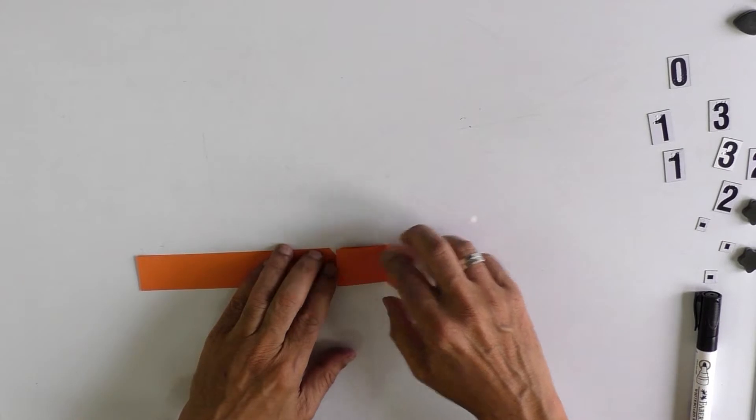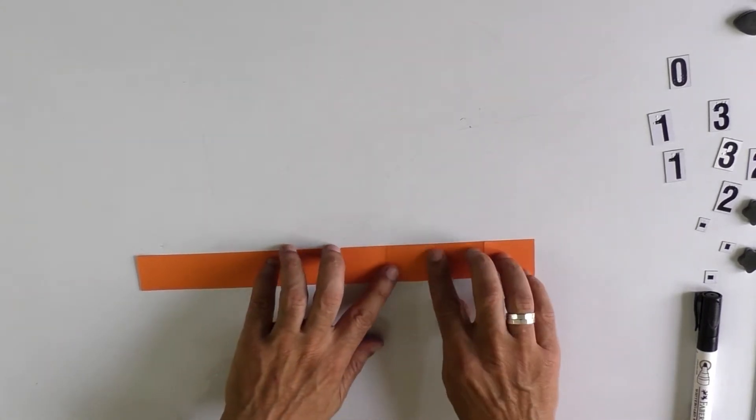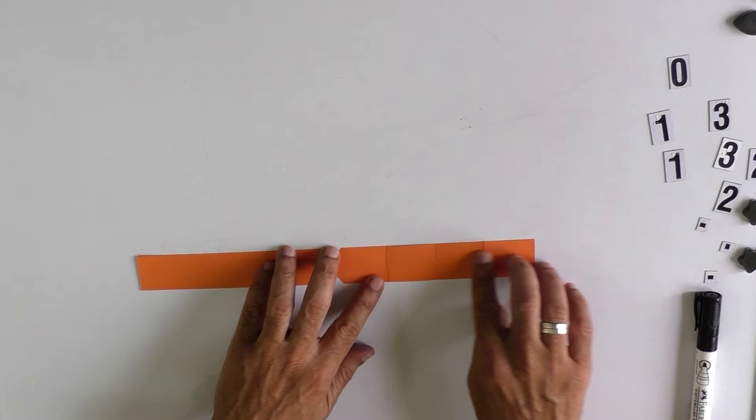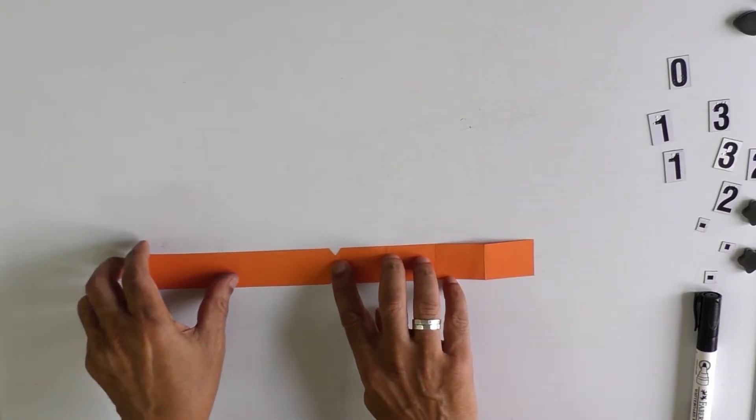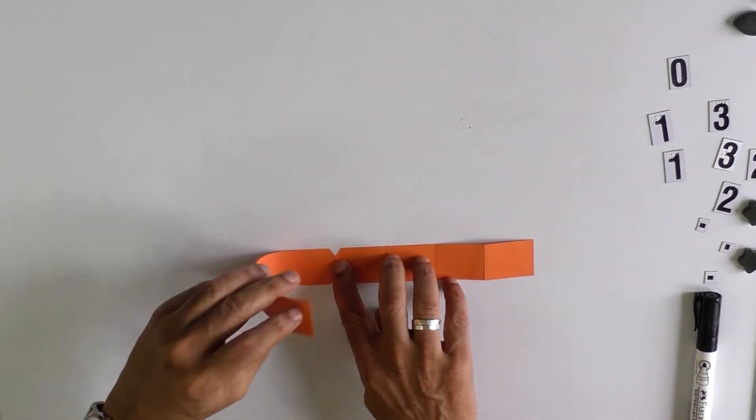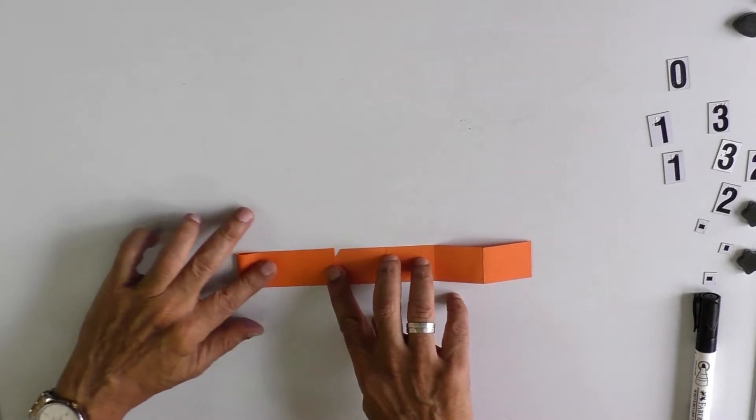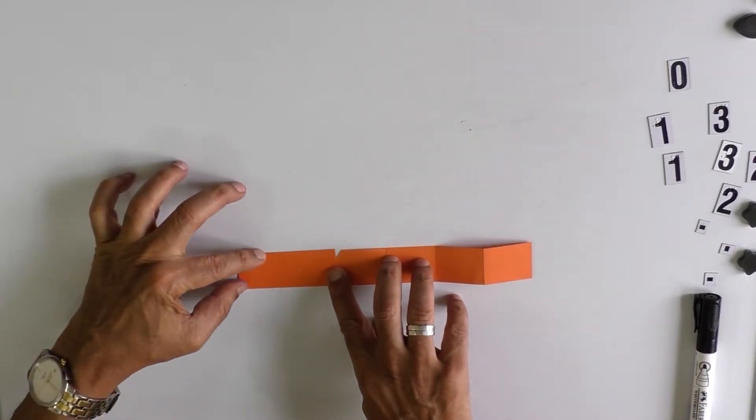Now you have made tactile markings on the positive side of this number line. Now similarly, you make the negative part of the number line.